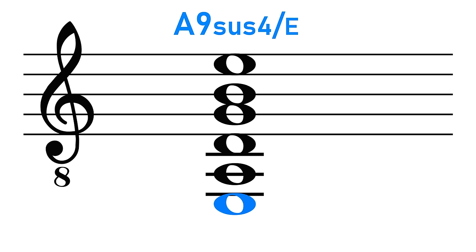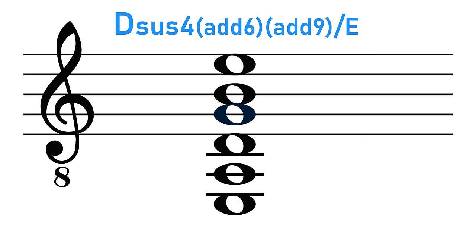We could actually make an argument that any of the notes in this chord are the root note, and then base our chord label around that. For example, if we pretend that D was the root note, then A would be the 5th, E would be the 9th, B would be the 6th, G would be the 4th, and that would give us a D sus4 add 6 9 over E.